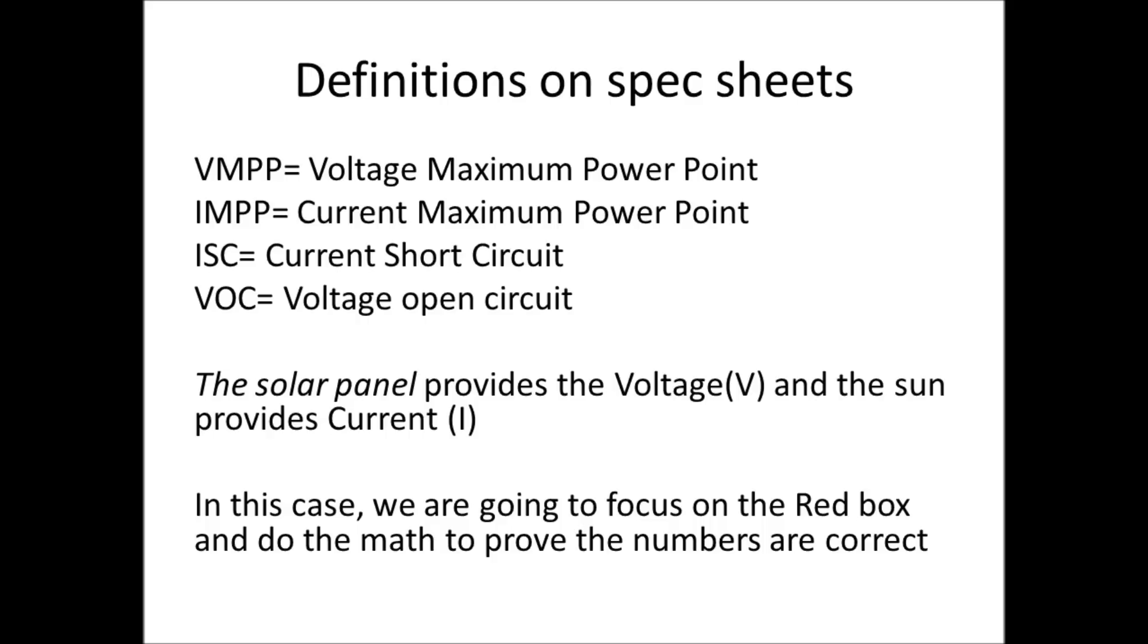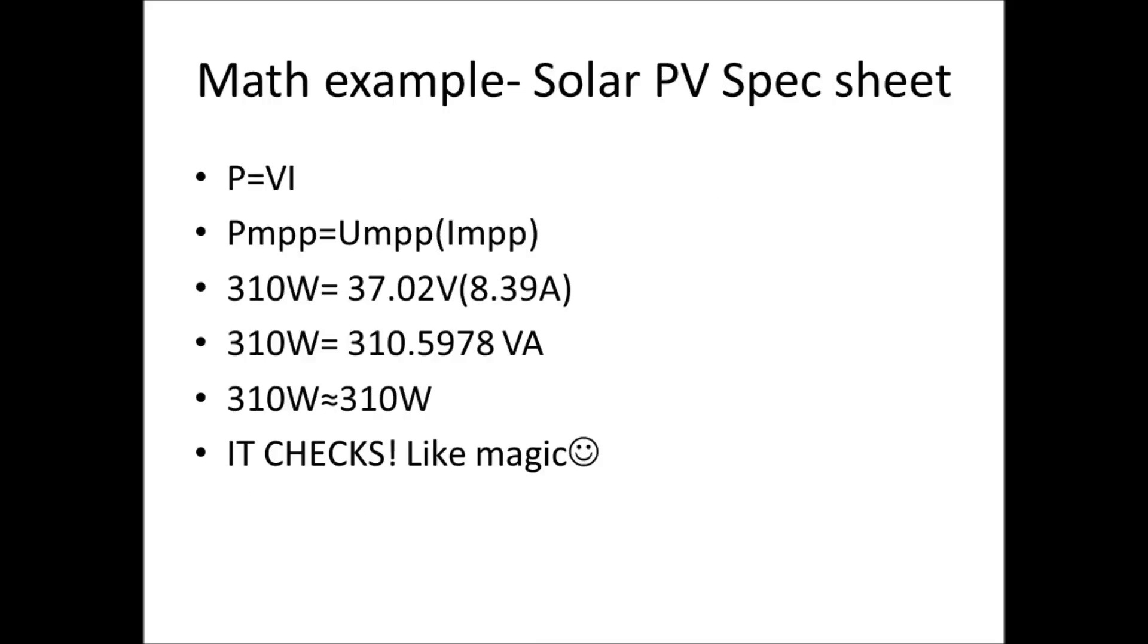If voltage maximum power point equals Vmpp, and the current maximum power point equals Impp, the current short circuit equals Isc, and the voltage open circuit equals Voc. The solar panel provides the voltage and the sun provides the current. In this case, we're going to focus on the red box once again and do the math to prove the numbers are correct. P equals V times I.